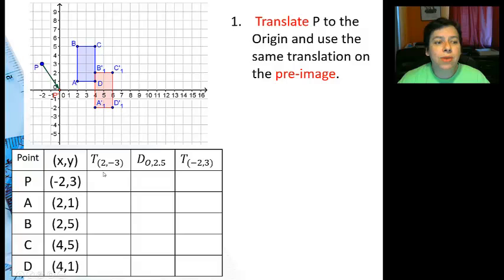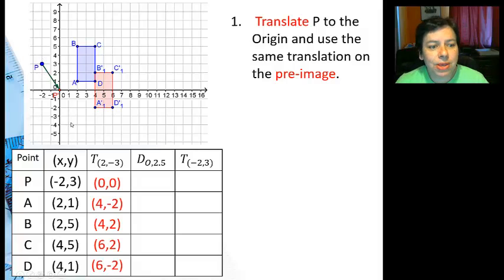Well, let me go ahead and write down the coordinates for everything after translating it. So I'm going to be sliding 2 to the right and 3 down, which is, by the way, the opposite of the coordinates of my point, just for your reference. So I've got my new coordinates for point P is at the origin.